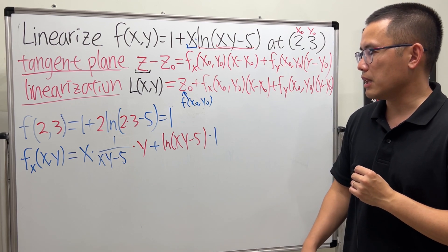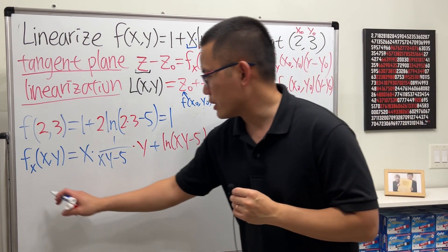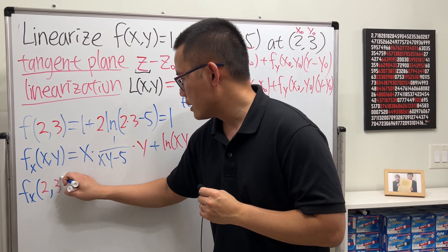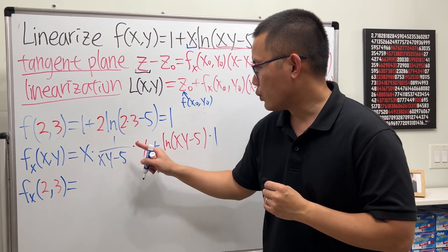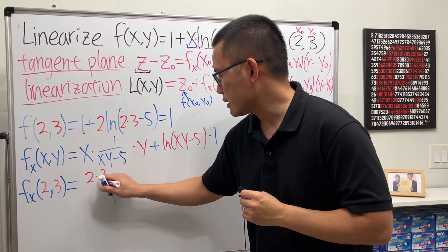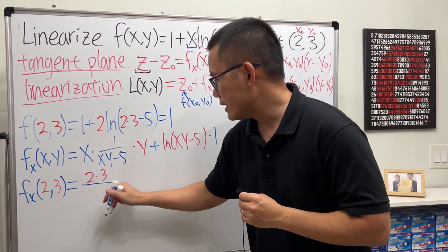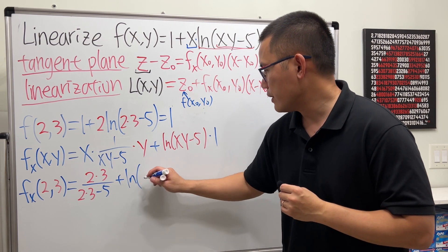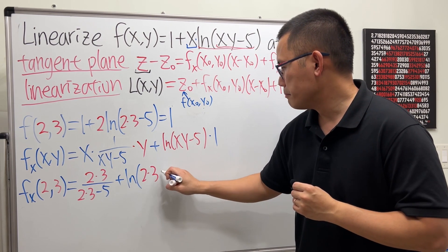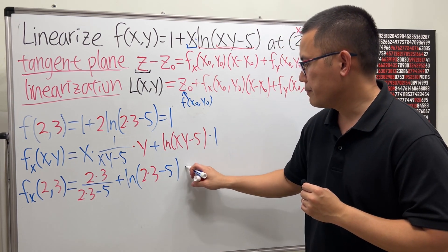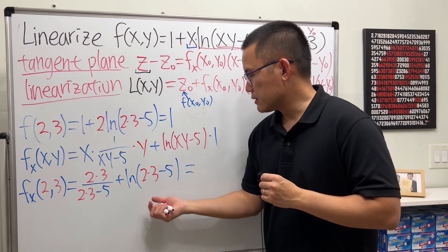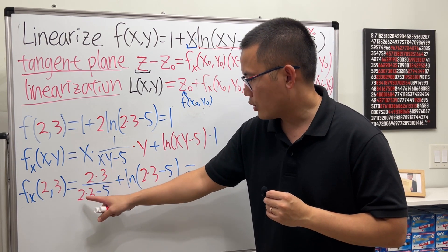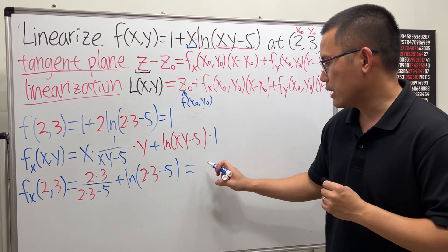Now plug in (2, 3): f_x(2, 3) = 2 · (3) / (2 · 3 − 5) + ln(2 · 3 − 5) · 1 = 6/1 + ln(1) = 6 + 0 = 6.